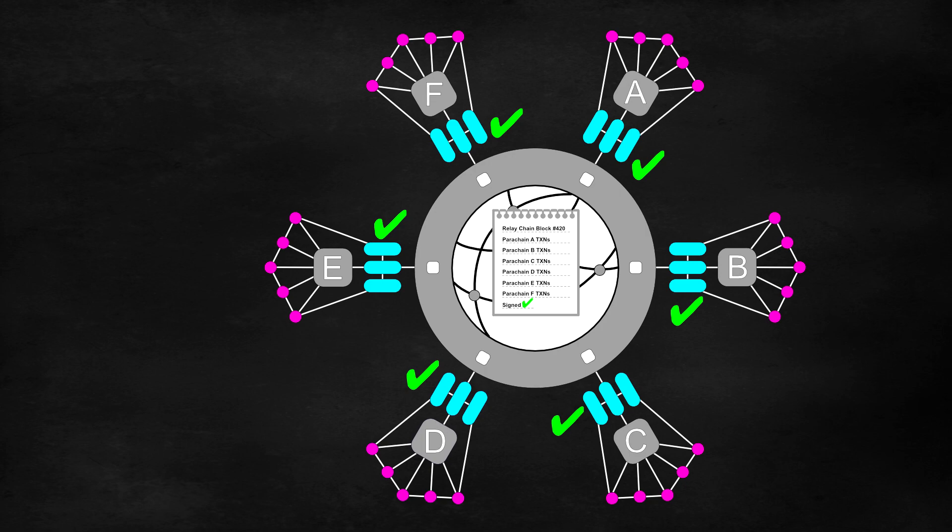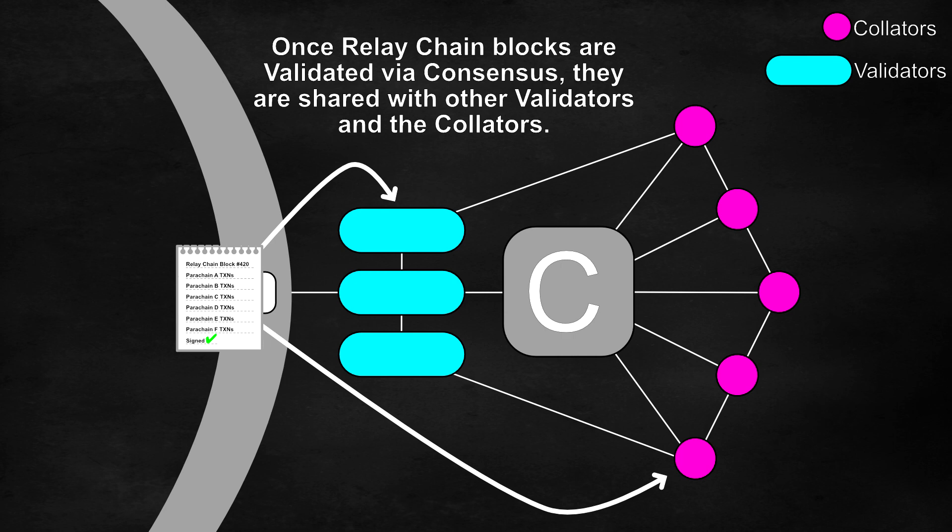Once this consensus is reached, the validated relay chain block candidate is then shared with the validators and collators, and the process repeats itself.